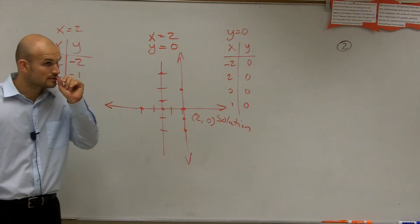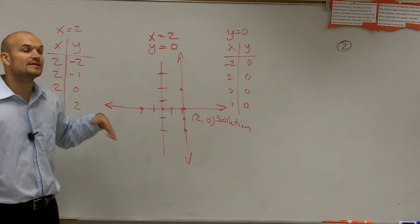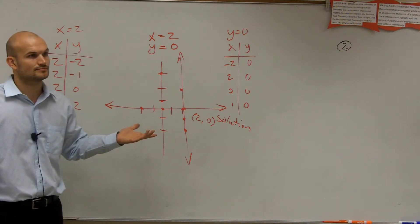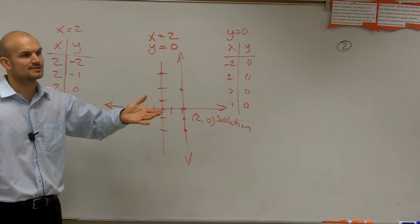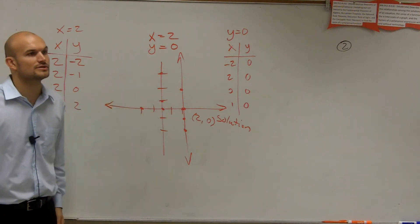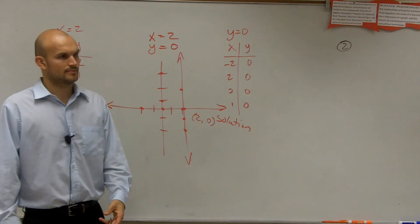Any questions? Yes? How can you tell it's consistent? It's going to be consistent if there's a solution. It would be inconsistent if there's no solution. So if they don't intersect? Which would be what kind of lines? Parallel. Parallel. So if they're parallel lines, then you'd have an inconsistent solution.